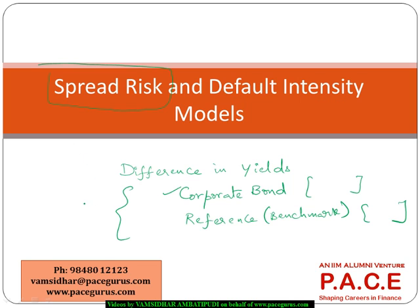In this process, in the basis mechanism, it is assumed that the maturity of both instruments — whether it is the security of my interest or the security with which I am comparing — should have the same level of maturity. So whatever is the difference, it is a reflection of the additional risk that is present in my security of interest compared to the benchmark. It is a straightforward indication of the excess risk that is present.